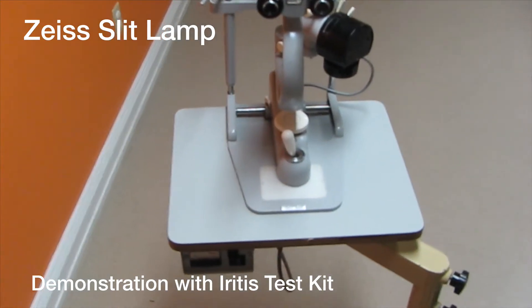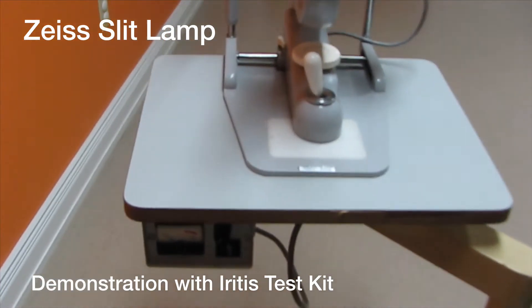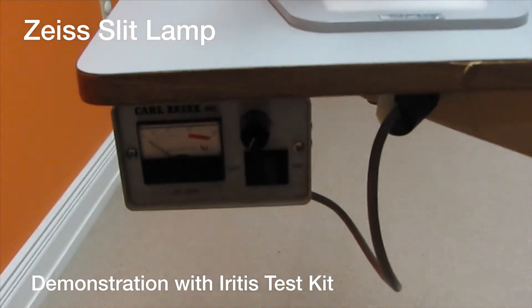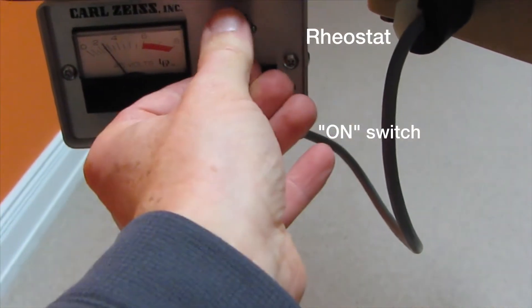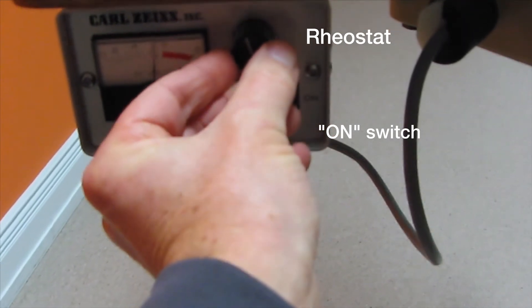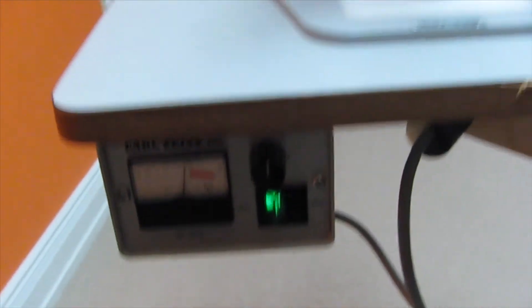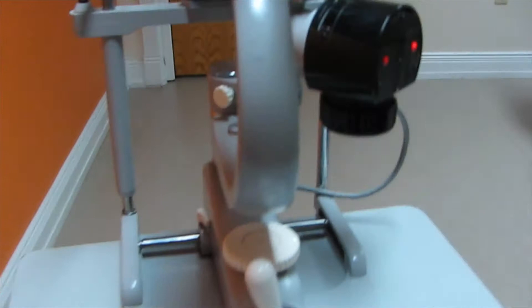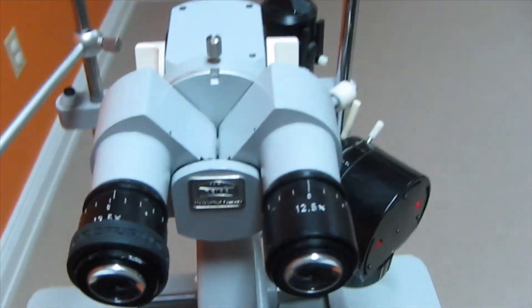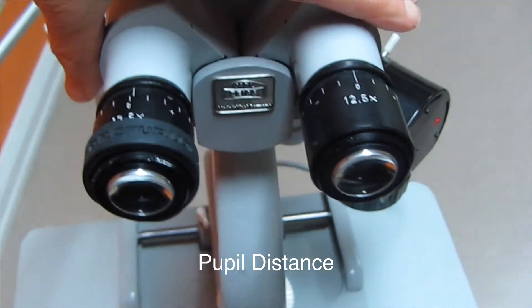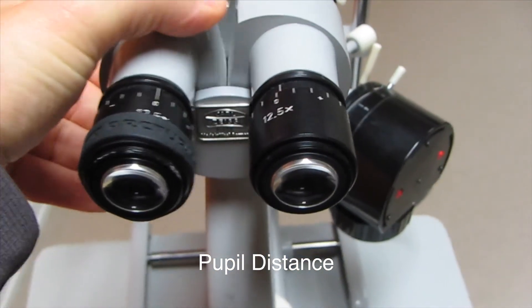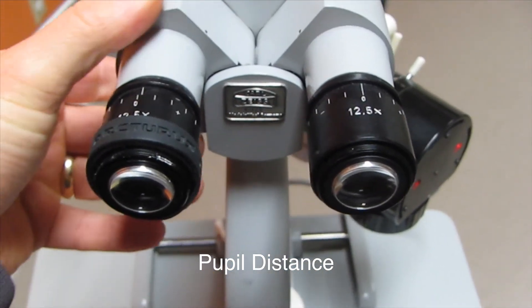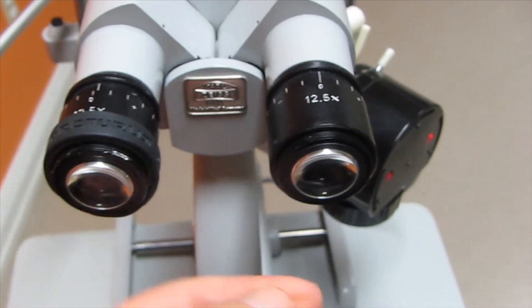The use of a Zeiss slit lamp with an iritis test kit. Adjust the oculars for your eyes.